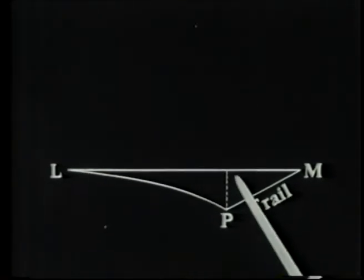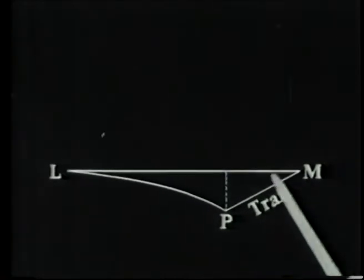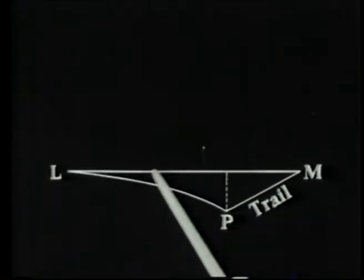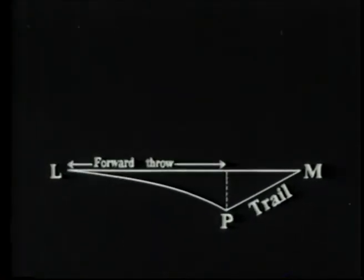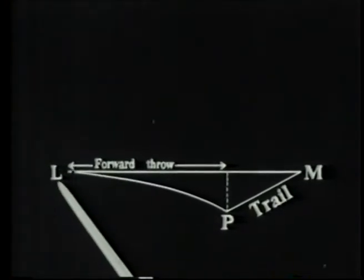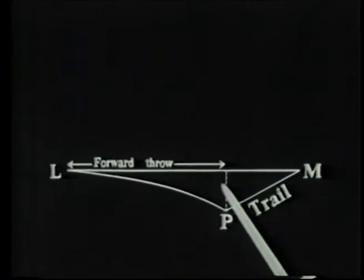It is resolved along and across track to give the track and cross components of trail. This distance is called the forward throw. It is equal to the distance from the release point L to the whole range point M, less the track component of trail.